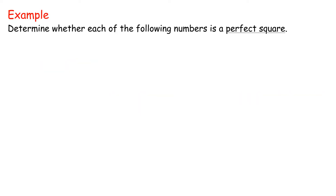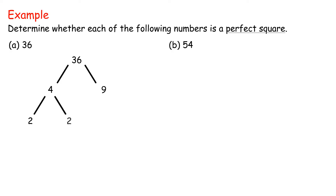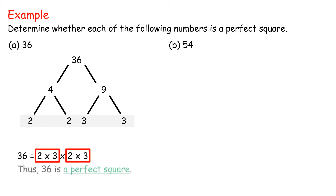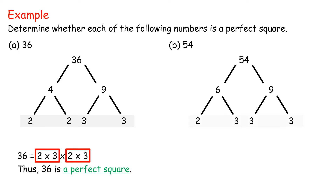Example: Determine whether each of the following numbers is a perfect square. A: 36. B: 54. Solution A: 36 can be divided by 4 and 9. 4 can be further divided by 2 and 2, while 9 can be further divided by 3 and 3. So 36 equals 2 times 3 times 2 times 3. These prime factors can be grouped into two identical groups, so 36 is a perfect square.